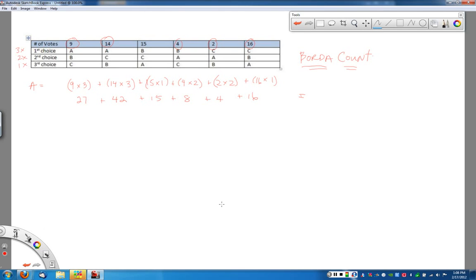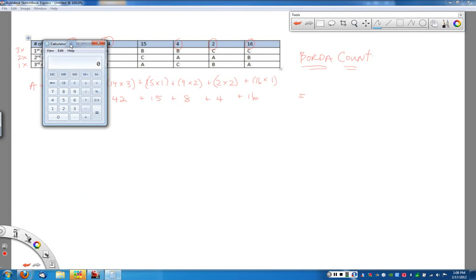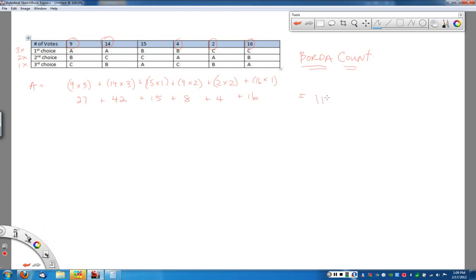So when I go through to calculate the Borda Count, what I'm going to do is I'm going to have to add each of these values up. I'm going to grab my calculator here real quick. Actually, maybe we can be clever here and do it this way. Just being lazy. Awesome. Okay, so here's my calculator. So I'm going to do 27 plus 42, oops, it's harder than it looks. Okay, 27 plus 42 plus 15 plus 8 plus 4 and plus 16 ends up giving candidate A a total of 112 points.